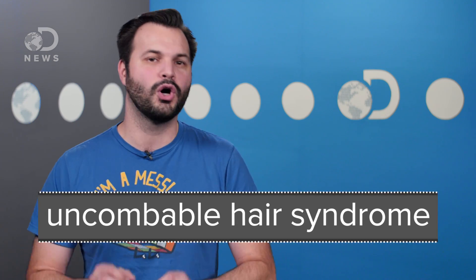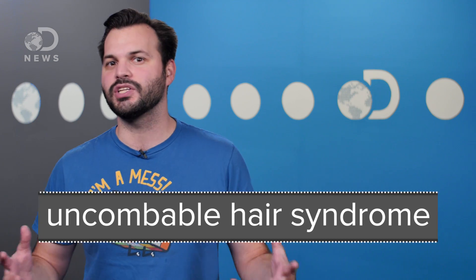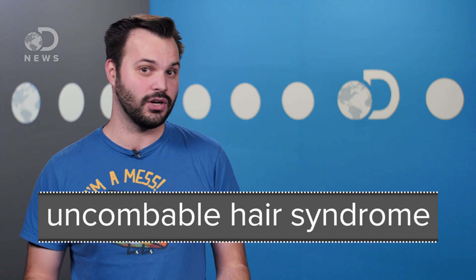There's even a condition called uncommable hair syndrome, involving a gene mutation that doesn't allow keratin to bond to the hair shaft correctly, causing extremely dry, frizzy hair and endless tangles. But keratin isn't the only thing that changes hair type.